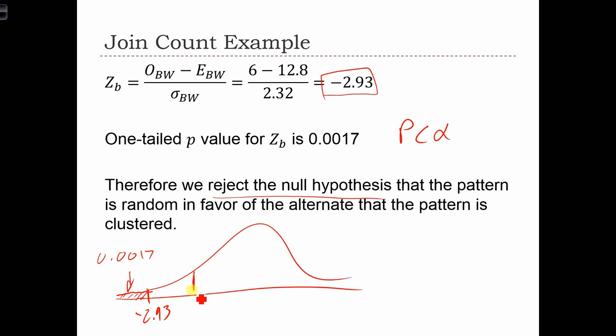And of course, we had a critical value over here. And the area to the left of the critical value was 10%, or 0.1. So of course, we have p less than alpha, and we have to reject the null.